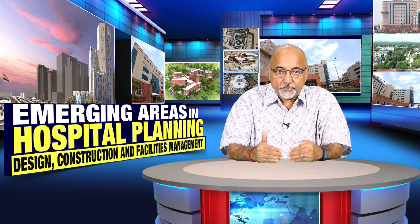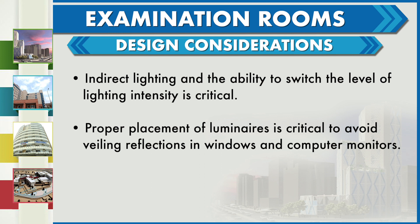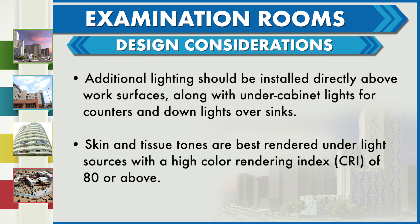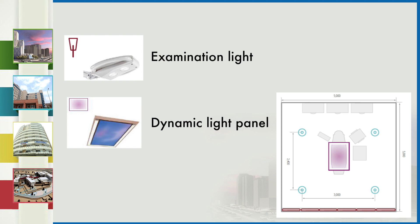Examination rooms. The design considerations for examination rooms are indirect lighting and the ability to switch the level of lighting intensity, which is critical. Proper placement of luminaires is critical to avoid veiling reflections in windows and on computer monitors. Additional lighting should be installed directly above work surfaces, along with under cabinet lights for counters and down lights over sinks. Skin and tissue tones are best rendered under a light source with a high colour rendering index of 80 or above. Examination light and dynamic light panel are shown on the slide on screen.